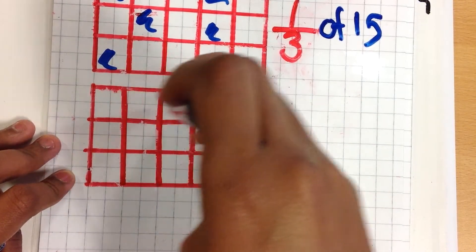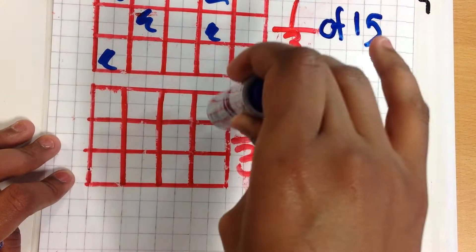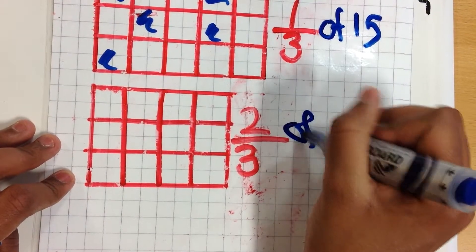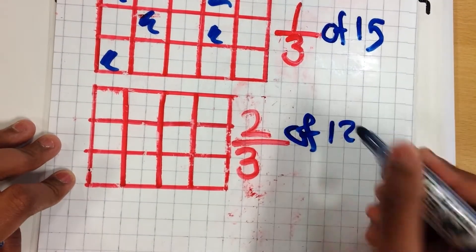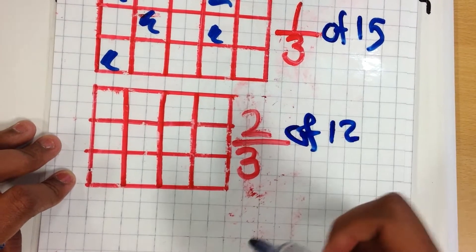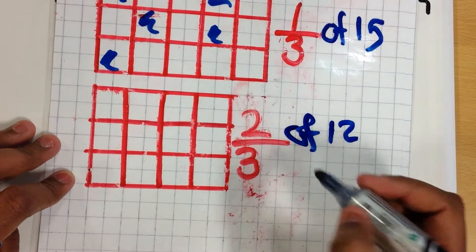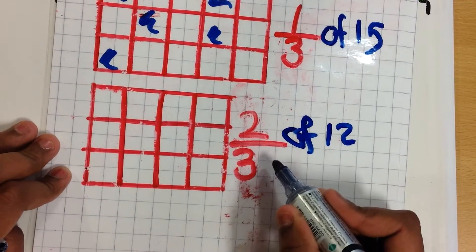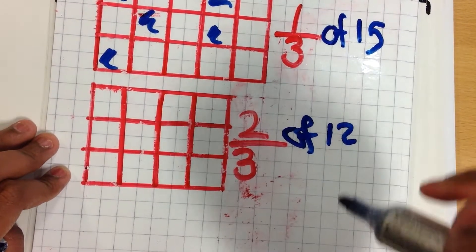So you have to do, you have to count again. 1, 2, 3, 4. And then 3 of 12. So you do 12 divided by 3, which is 4. So you have to do 4 times 2, which is 8.